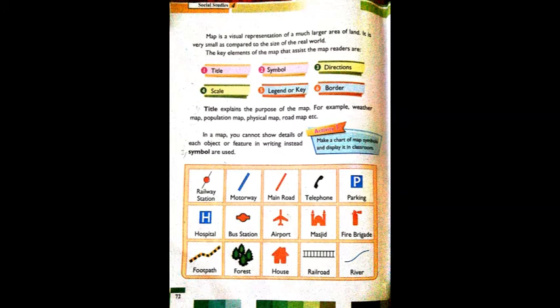When a map is small in size, you cannot show full details of everything, so you use small symbols in the map. Different symbols are used on maps - for example, a line with a red circle might show a railway station. Next, motorway, main road, telephone - a symbol shows that there is a telephone here. A 'P' symbol shows this is a parking area. 'H' stands for hospital. All these symbols are used in the map instead of writing full details, so you can easily identify things.